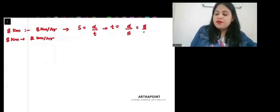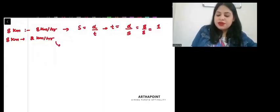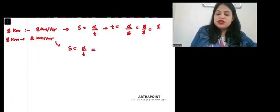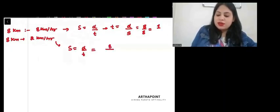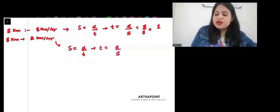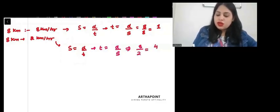So, it will be 8 by 8, that means 1 hour. Here, speed is distance by time. So, time will be distance by speed. Distance is 8 km, speed is 2 km per hour. So, time is 4 hours.